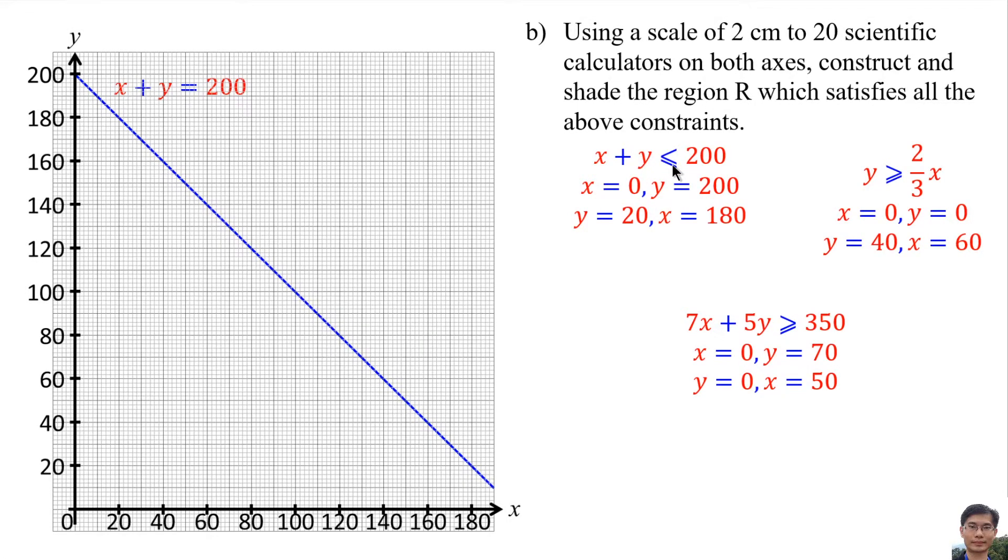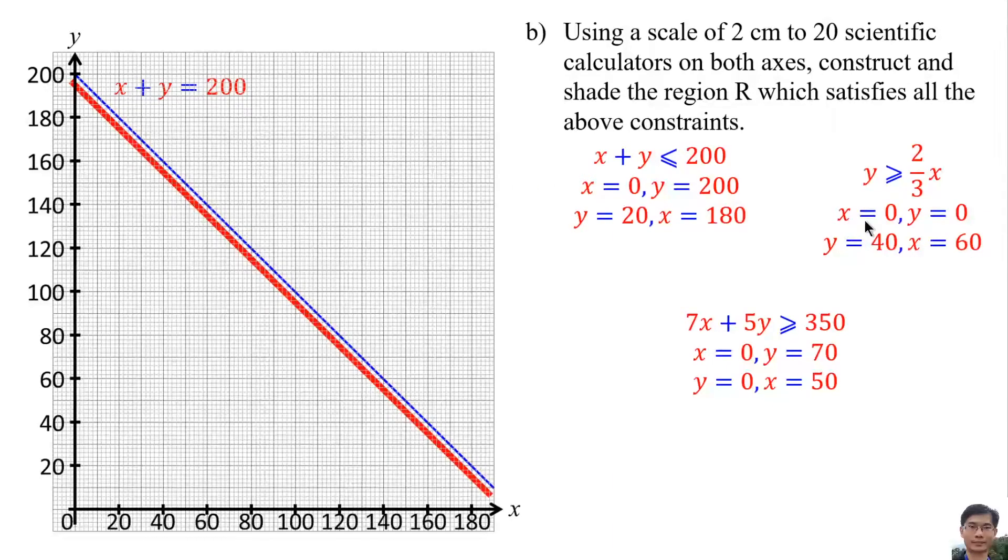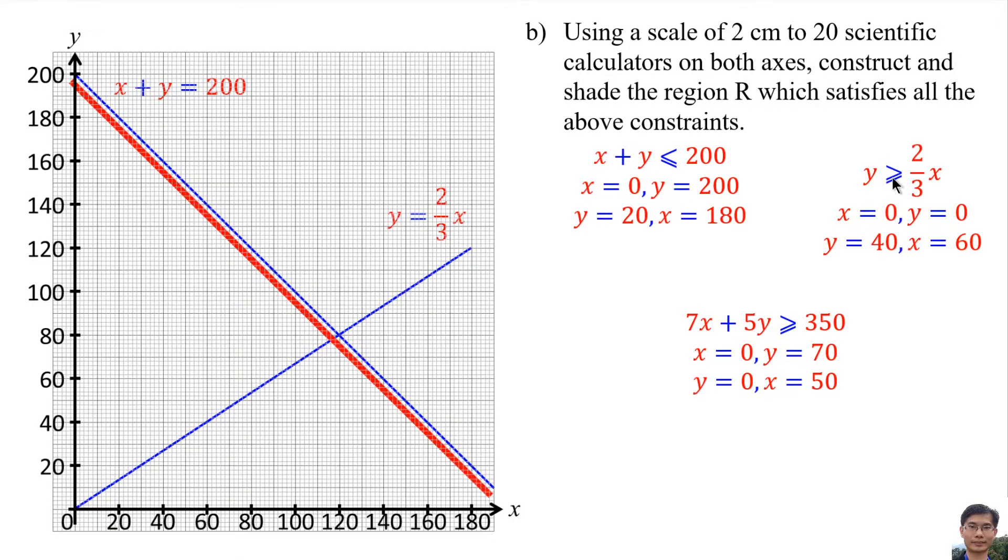y less than or equal means below the solid line. Number of scientific calculator of Type B, x0, y20, y40, x60. So this point. Connect both points. y more than or equal means above the solid line.